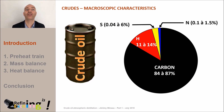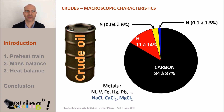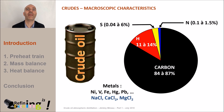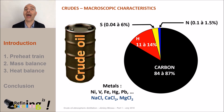Let's finish with the minority elements — there are metals. These metals will be present in the form of two major families. The metals associated with hydrocarbons, where we mainly find nickel and vanadium, and to a lesser extent iron, mercury, lead, etc. And metals associated with chlorine salts.